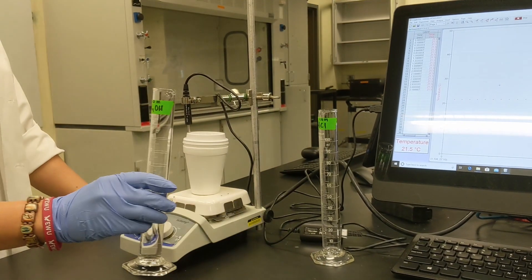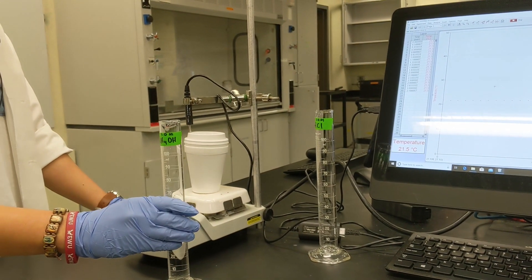We are going to do a three-minute stabilization period before we add our 1 molar ammonium hydroxide solution. We're going to go ahead and add our 1 molar ammonium hydroxide solution to the calorimeter.